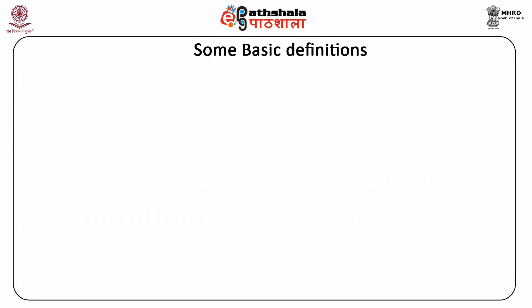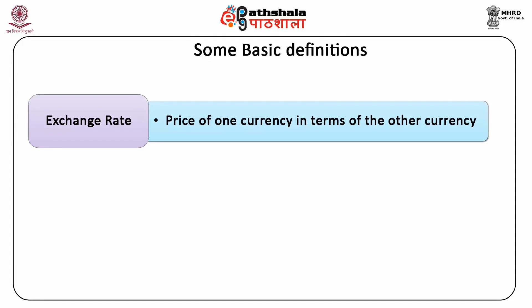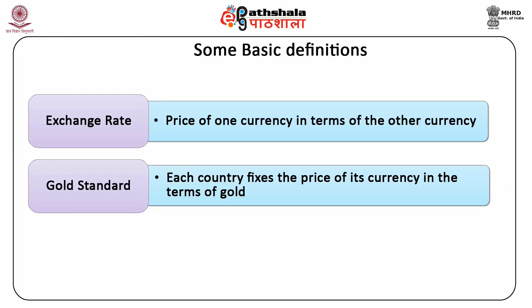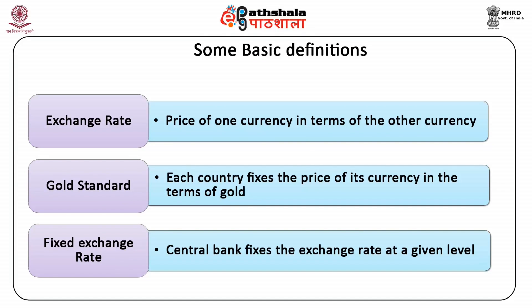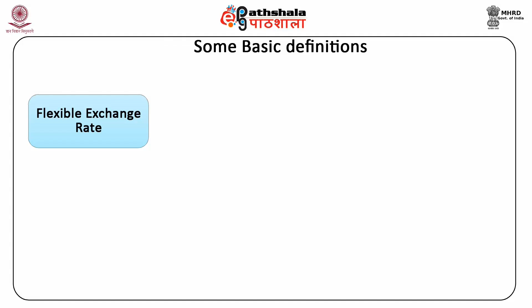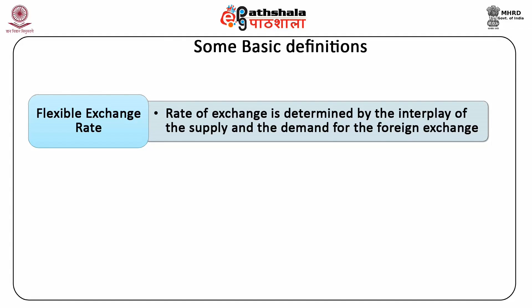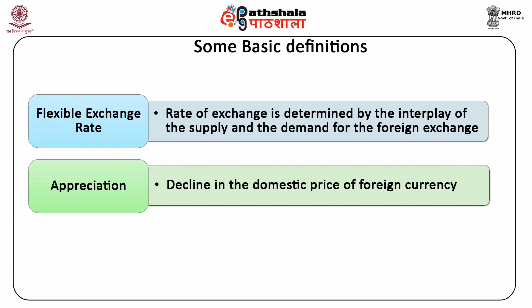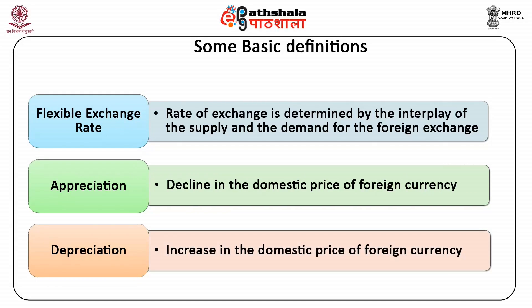There are some basic definitions. Exchange rate: it is defined as the price of one currency in terms of the other currency. Gold standard: each country fixes the price of its currency in terms of gold. Fixed exchange rate: the central bank fixes the exchange rate at a given level. Flexible exchange rate: the rate of exchange is determined by the interplay of supply and demand for foreign exchange.